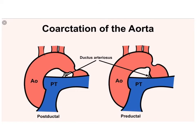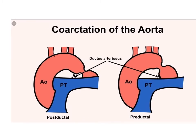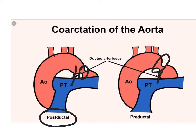These are the two main types of coarctations and how they're classified. You have a postductal — the ductus is here and the coarctation is beyond that, hence the word post. And preductal, where the coarctation is before the ductus. Those are usually how they're classified, though there are other classifications. Most of the time that's the question you'll be asked: is it preductal or postductal?